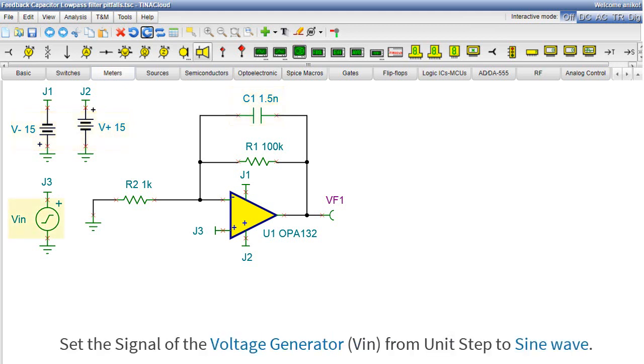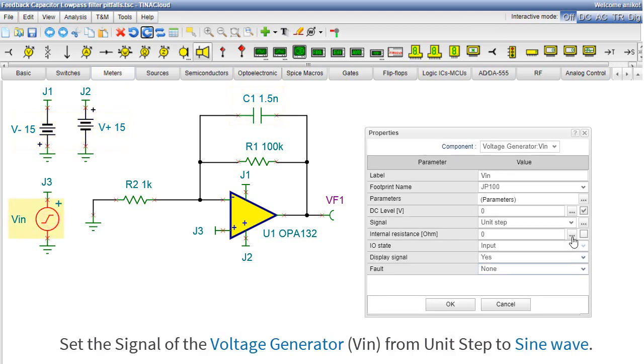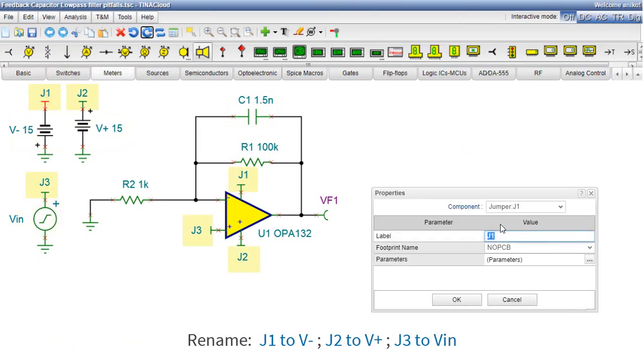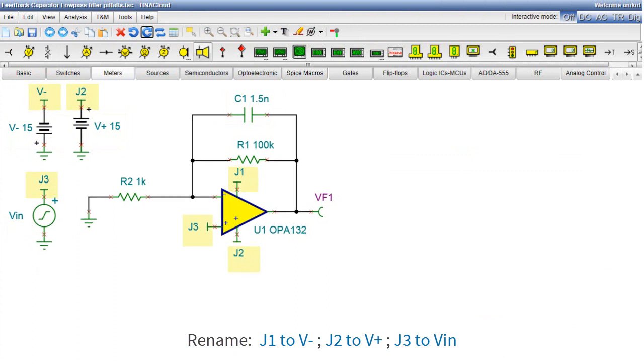Set the signal of the voltage generator from Unit Step to Sine Wave. Rename J1 to V-, J2 to V+, and J3 to VIN.